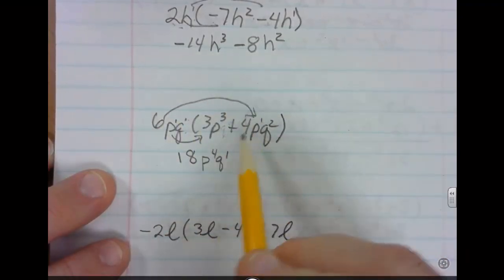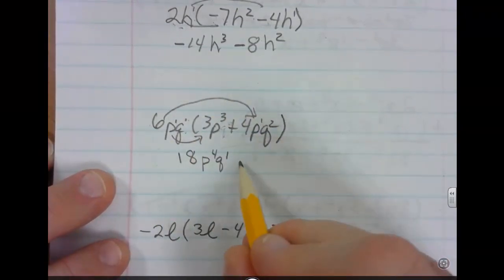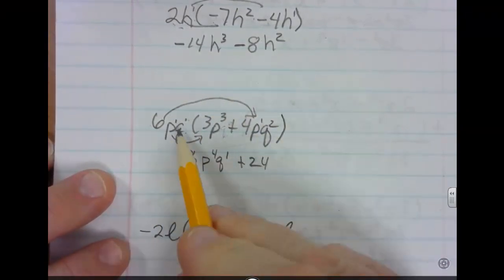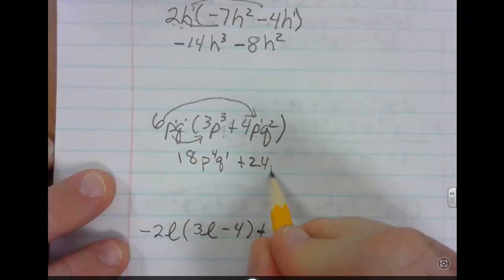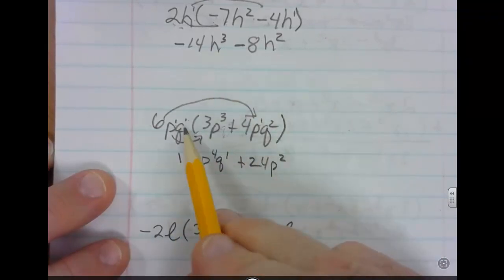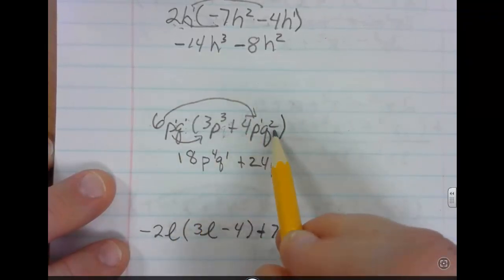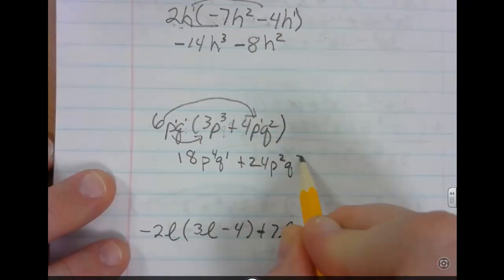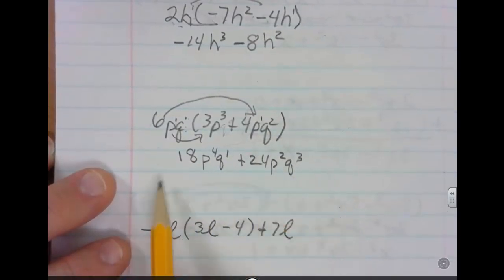Now we're going to distribute with the last term. 6 times the 4 is going to give you the positive 24. p of the first times p of the first is going to give you p to the second. And then q to the first times q to the second is going to give you q to the third. And this is our final answer.